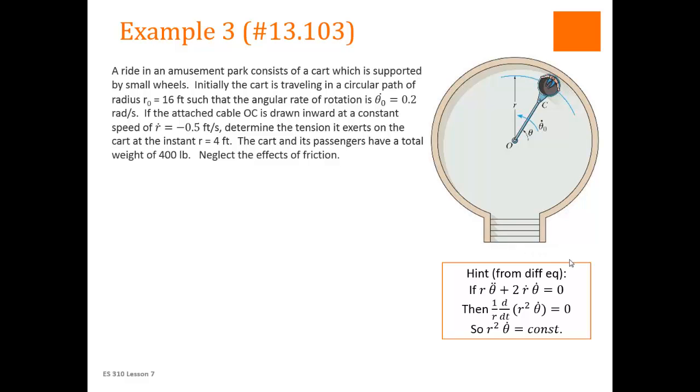We've got an amusement park ride. You see a lot of amusement park rides when we're talking about polar equations. This guy is sitting in this cart, and it's supported by small wheels. Initially the cart is traveling in this circular path, and r is 16 feet. And we're given the expression for its speed.